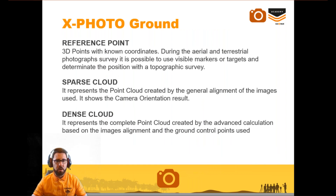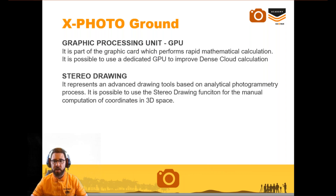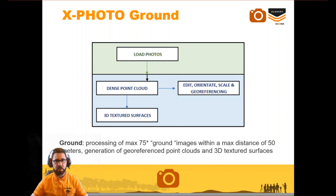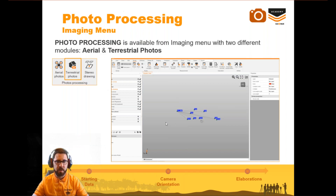I will show step by step the features for reference points, sparse cloud, and dense cloud during the demo. From the handouts menu you can also download the PDF of this presentation. To summarize: with Ground Basic we can upload photos, create a dense cloud, edit and orient the dense cloud, scale it, and create 3D textured surfaces. We can use a maximum of three reference points to directly georeference or scale the dense cloud and 3D mesh.